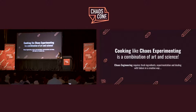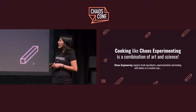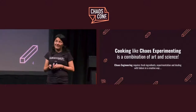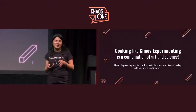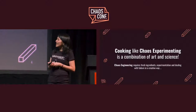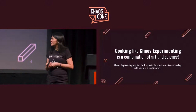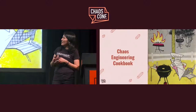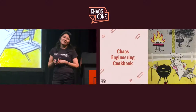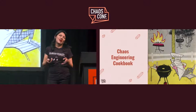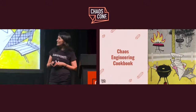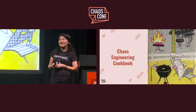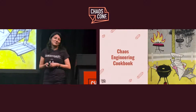Recently, while I was working in my kitchen, I thought that cooking and Chaos Engineering have a lot of things in common. They are a combination of art and science. For example, when you are practicing Chaos Experiments, you should be careful choosing fresh ingredients and managing failures. With these ideas in my mind, I asked myself why not write a cookbook about Chaos Engineering — and that is how I started this project.